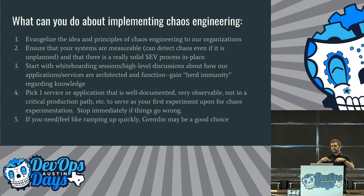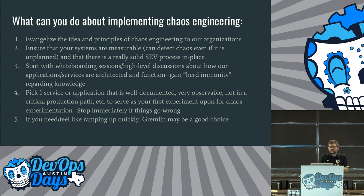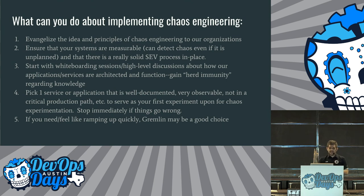What can each of us do about implementing chaos engineering? Number one: evangelize the idea and principles in your organizations. This can literally be a lunch and learn — 'who's interested in blowing things up in production?' You might get people who are excited and some who say 'I don't want you doing this.' Just have a conversation. Number two: ensure your systems are measurable. Make sure you can detect and monitor things happening in your environment. You want to know about chaos even if it's unplanned. And make sure you have a SEV process in place.